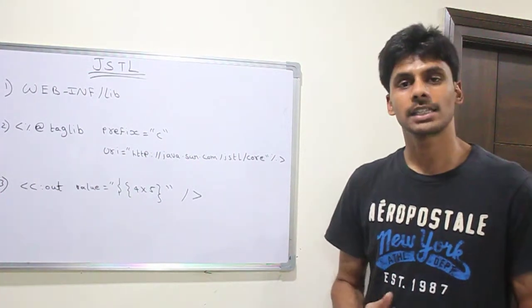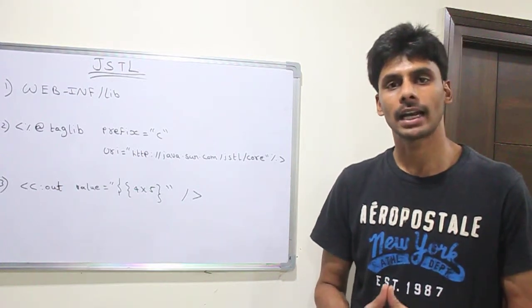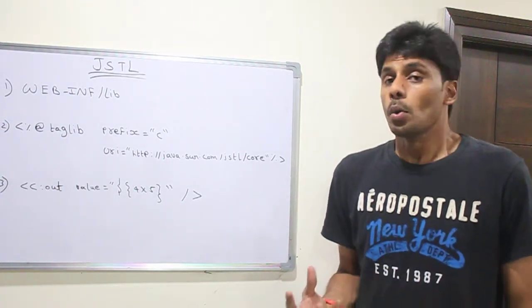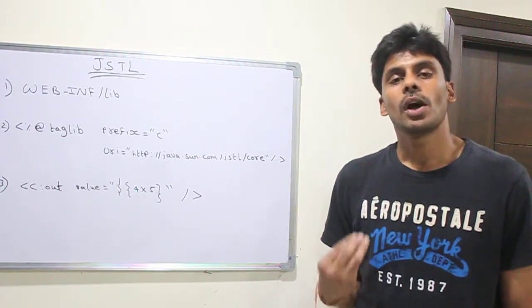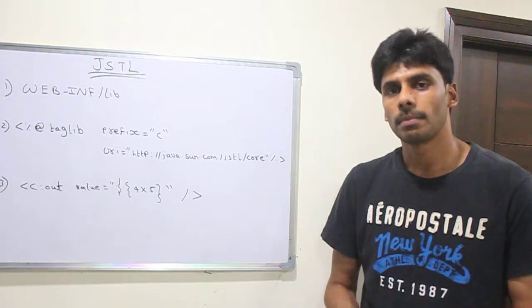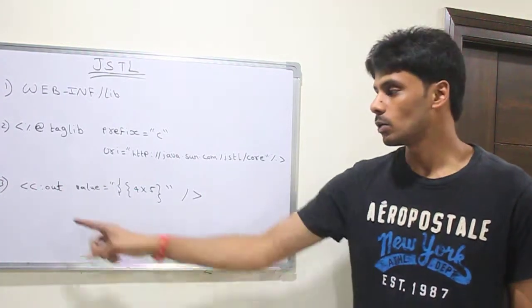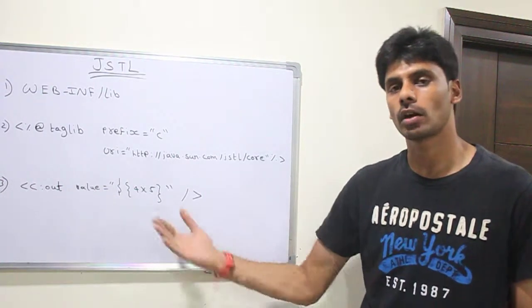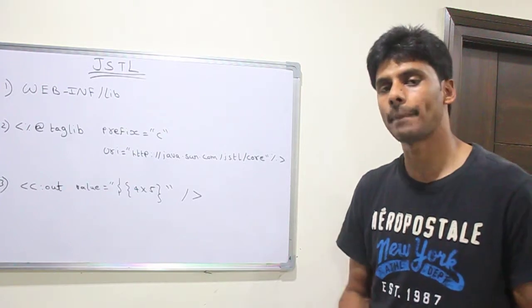To quickly summarize, JSTL stands for Java Standard Tag Library. It provides us a few tags which are very powerful which will allow us not to write a lot of Java code in our JSP pages making them easy to maintain. We can simply use tags like this and then a lot of functionality behind the scenes will happen for us.